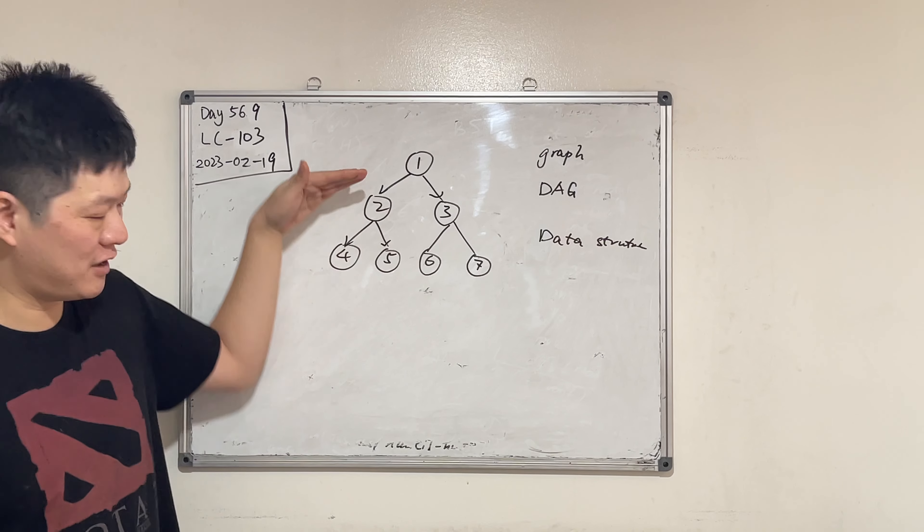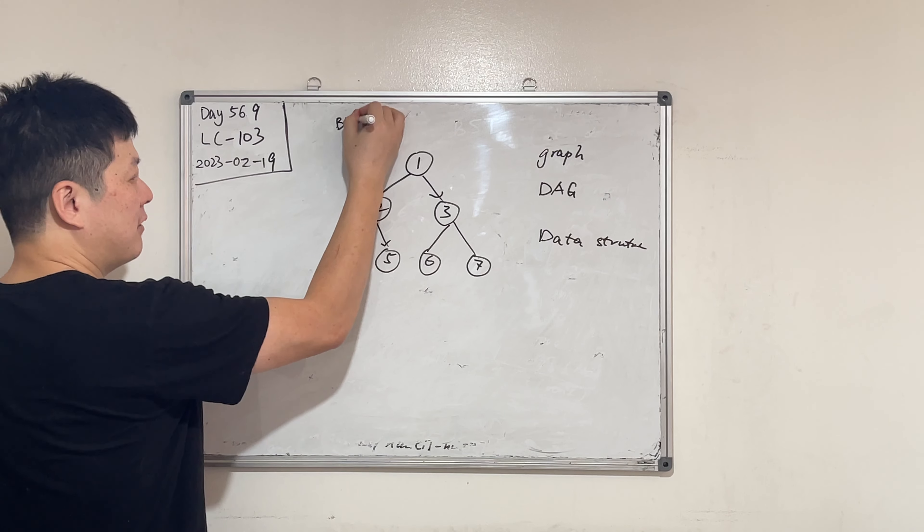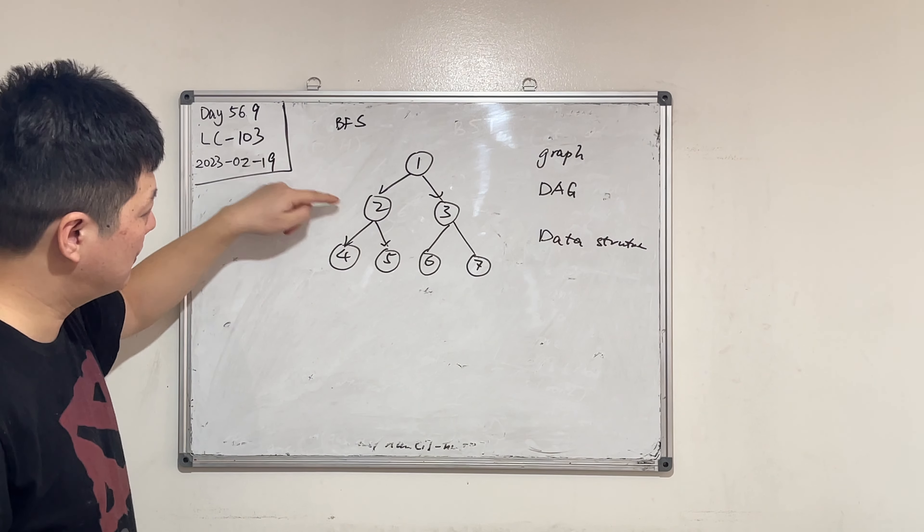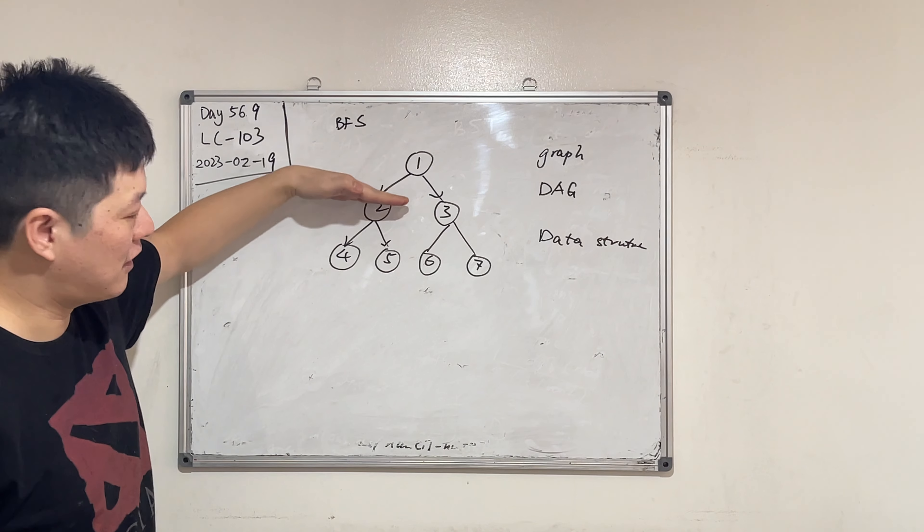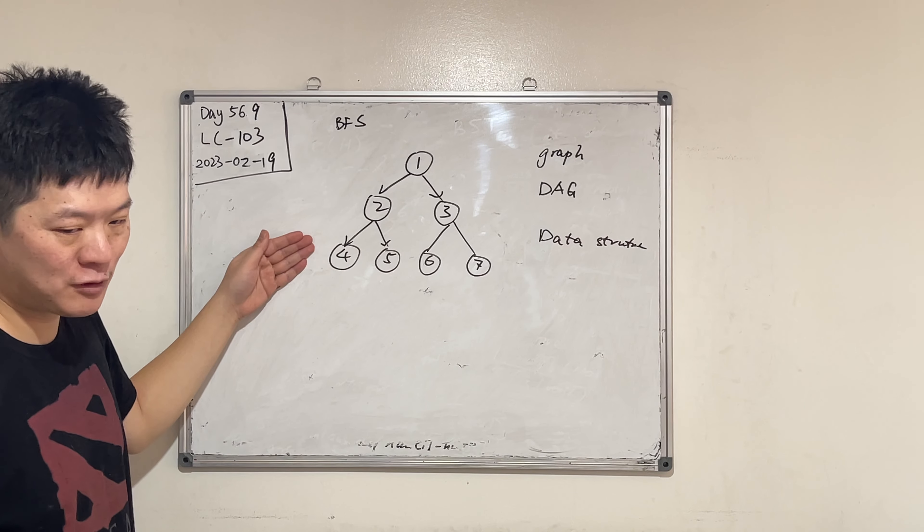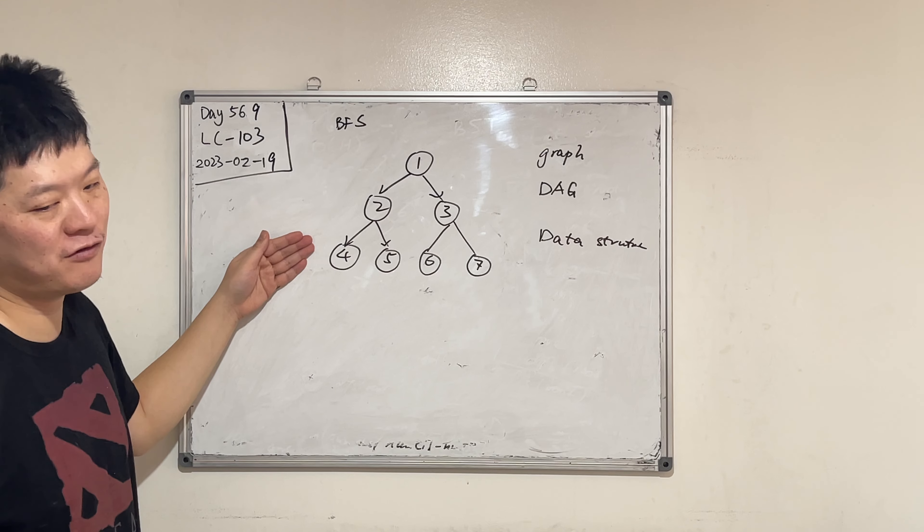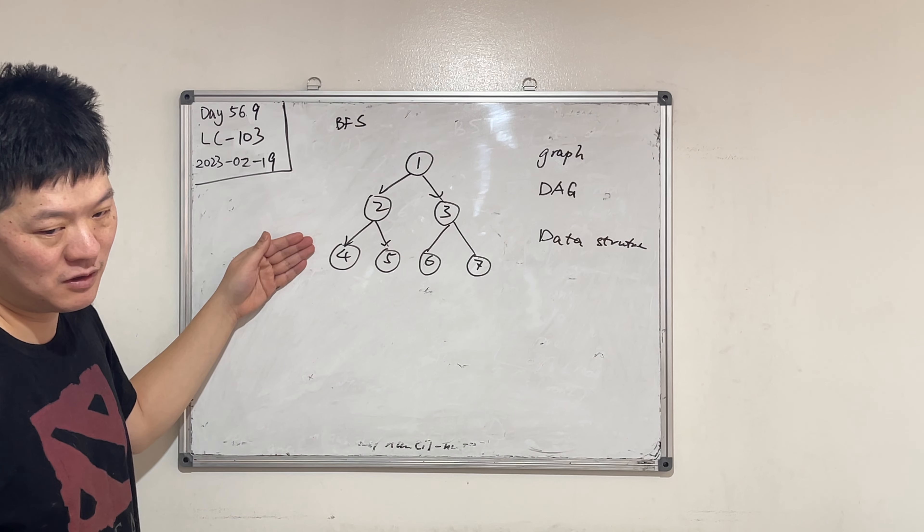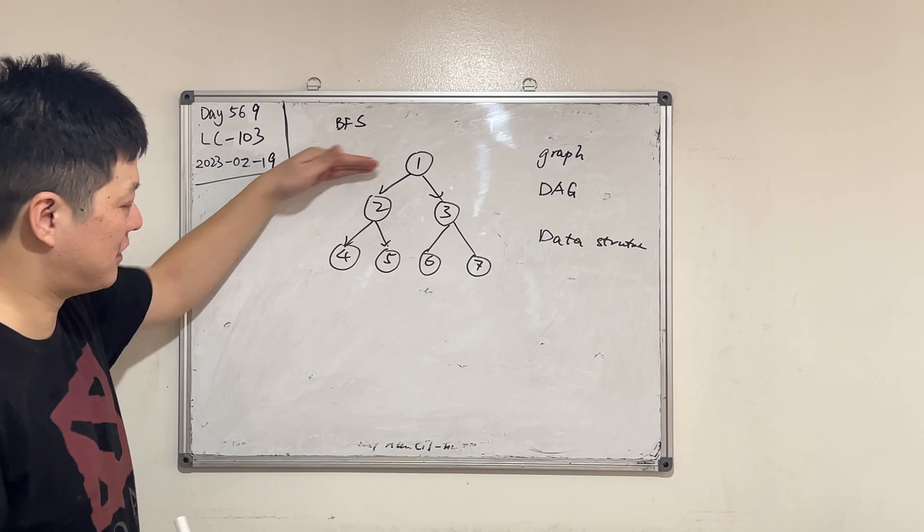What kind of order does the breadth first search order? For this particular tree: one, two, three, four, five, six, seven. Level by level. What's the data structure we need to use to perform a breadth first search? Queue. Queue, yes, queue.